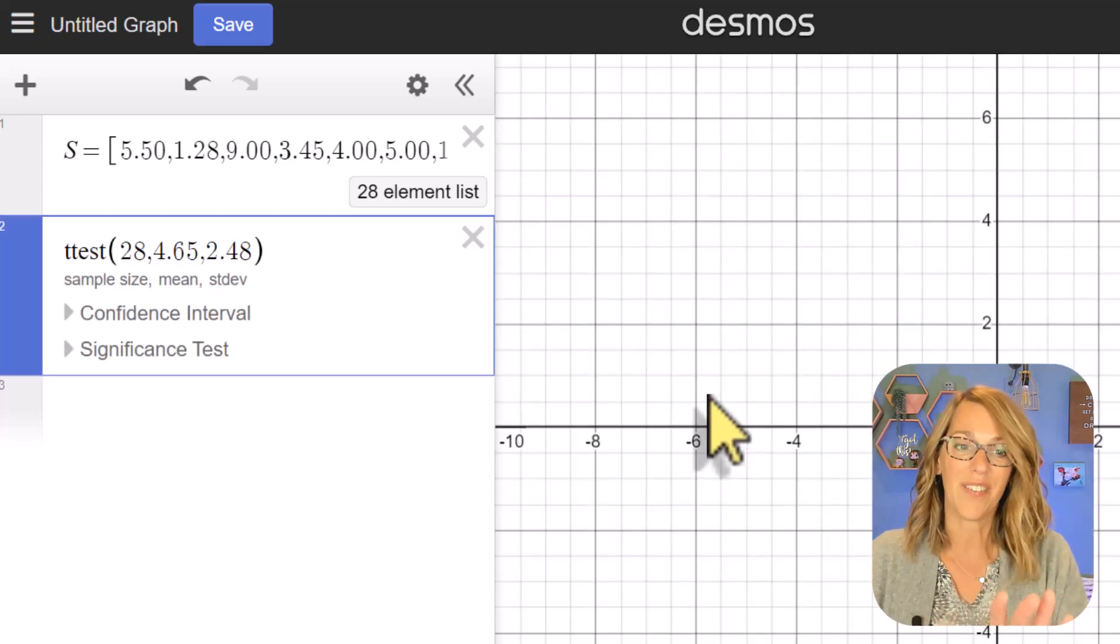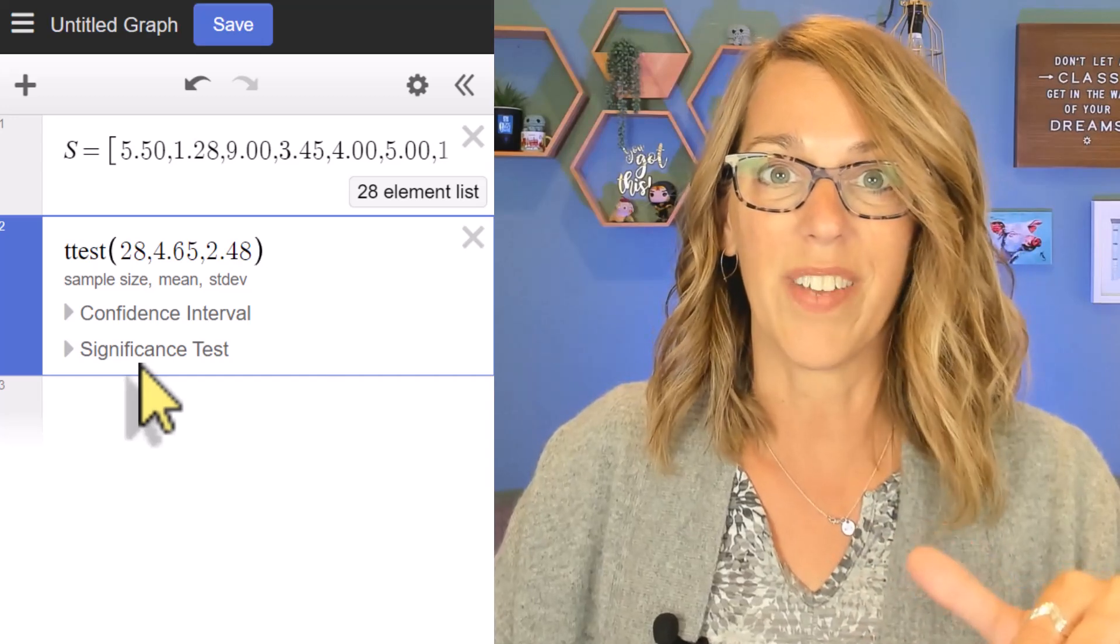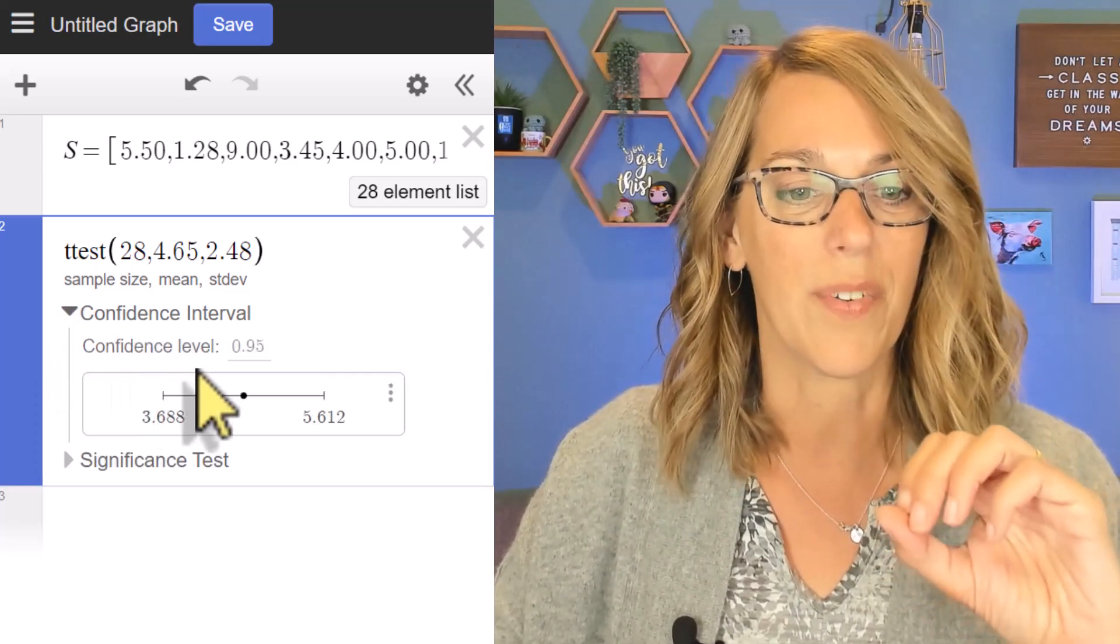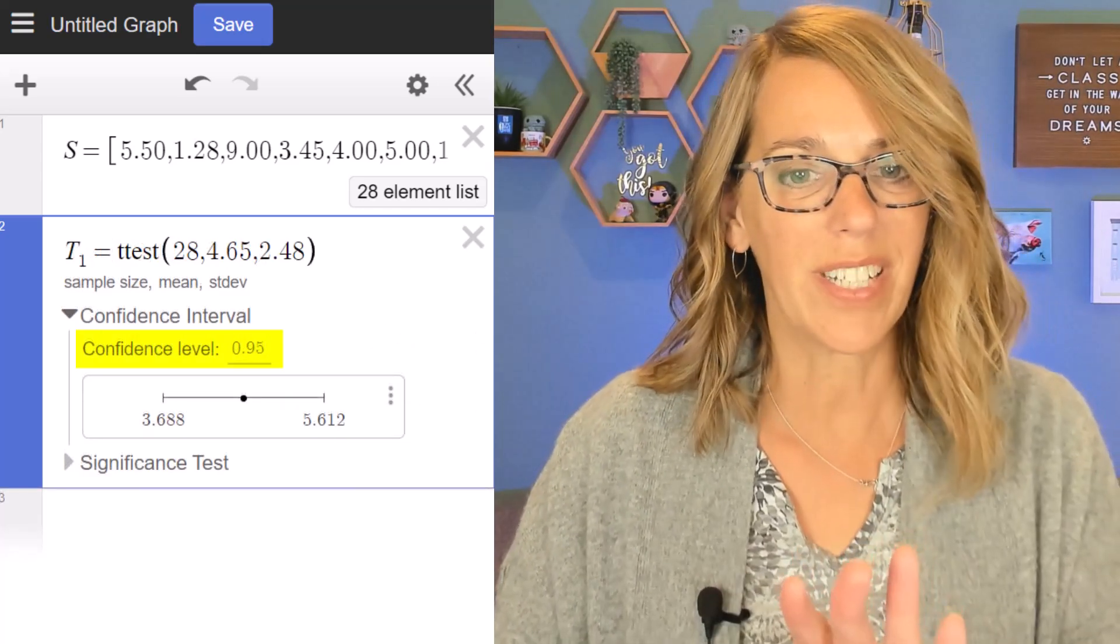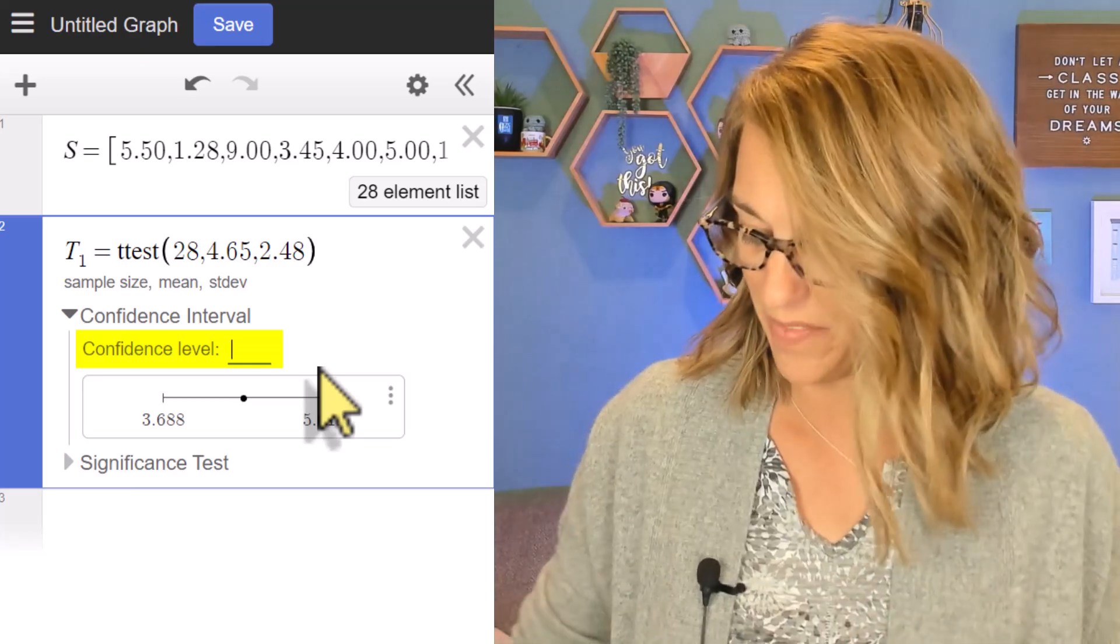even though we're doing a confidence interval. Notice it brings up two different options here. We're not going to do the significance tests. Let's go ahead and expand the confidence interval information. Now it's assuming a confidence level of 0.95, which is exactly what we want, but you could change this by clicking on that 0.95.